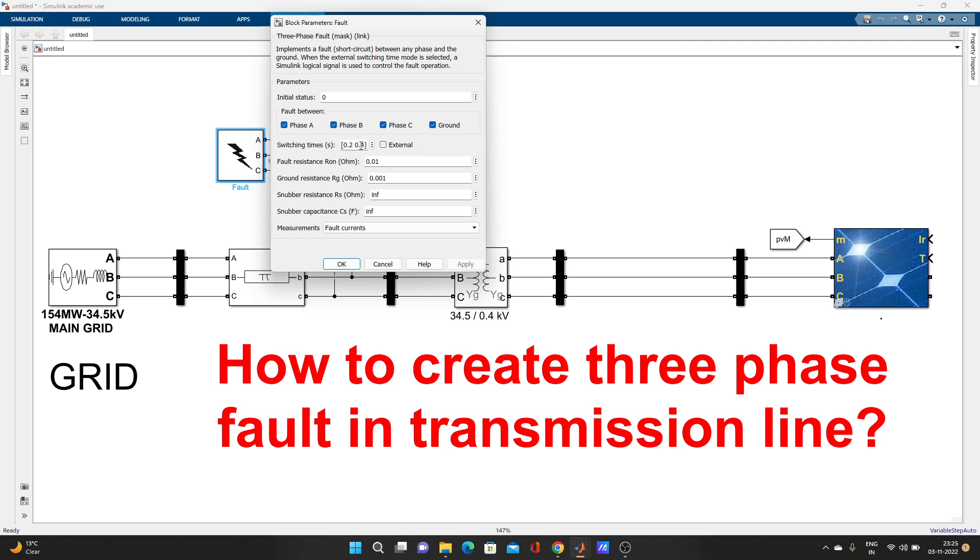And this switching time is given here 0.2 to 0.4. Suppose I am running my model for 0.5 second. So at 0.2 second, that fault will create in the model, and up to 0.4 it will be there. That fault condition, phase ABC to ground fault condition, will be there from 0.2 to 0.4.